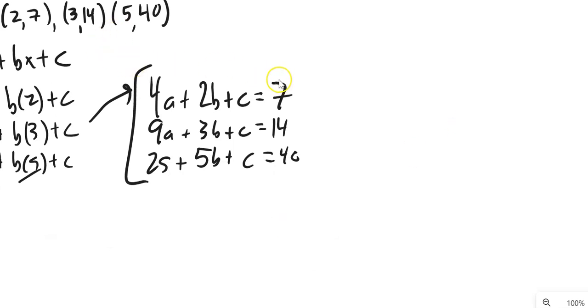We have what we've been calling a 3 by 4. Three equations, four pieces of information. So, what we're going to do is eliminate one of the variables. And c, to me, looks ripe for eliminating. So, let's do it.